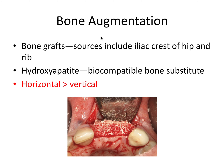Lastly, bone augmentation involves placing a bone graft, with sources including the iliac crest of the hip and the rib. Hydroxyapatite is a biocompatible bone substitute. Bone augmentation increases ridge height and surface area for the denture. Notably, it's much more difficult to restore vertical ridge height than horizontal ridge width — ridge width is generally much easier to improve with bone grafting, whereas increasing ridge height is significantly more challenging for a graft to achieve.